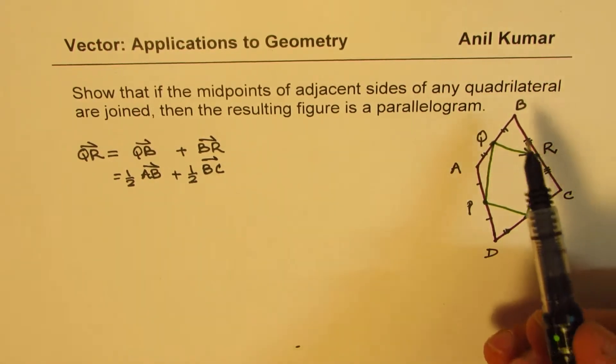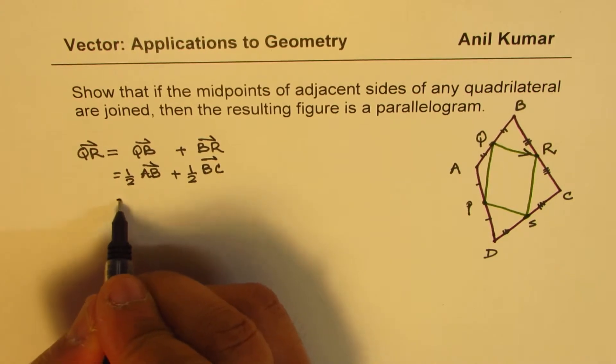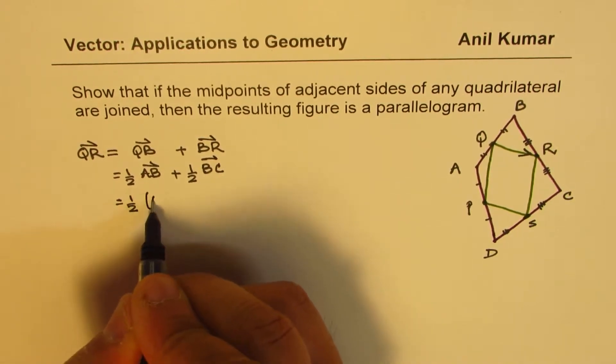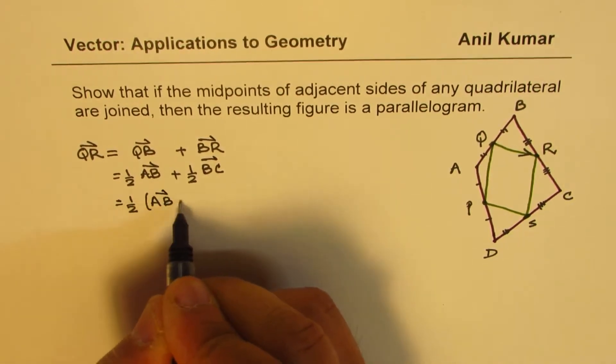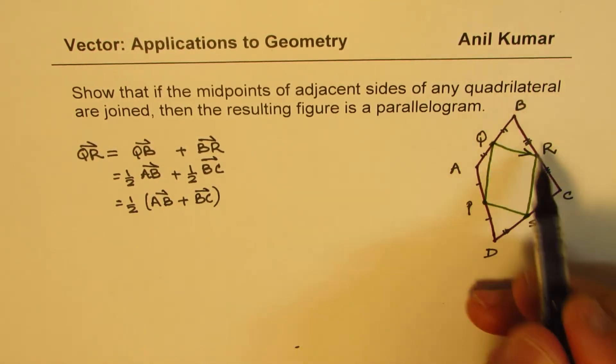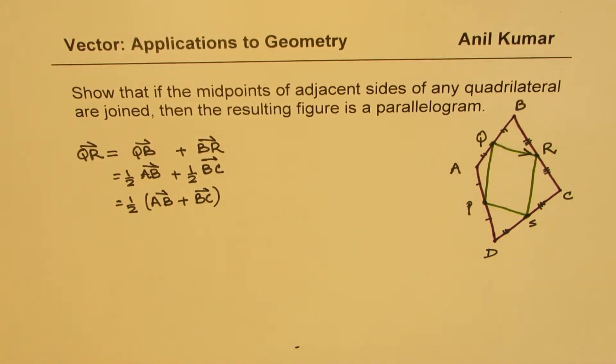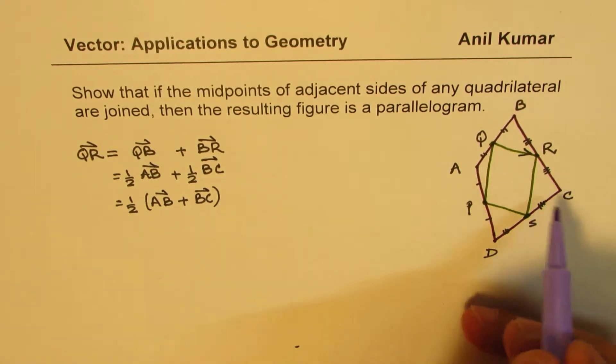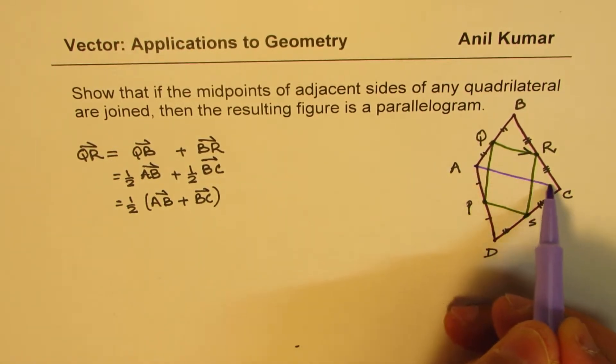So it is half of, we could also write this as A, B plus B, C. Now, A, B plus B, C is what? Well, let's join it. A, B plus B, C, we can join this. That is what it is.